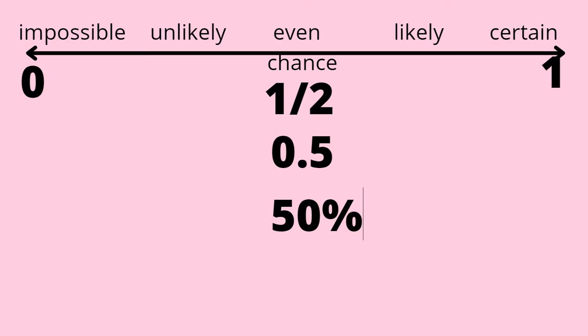And when an event is as likely to happen as it is not to happen, its probability is one-half, or 0.5, or 50%.